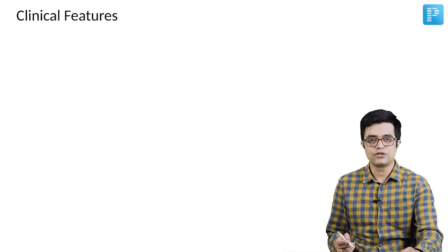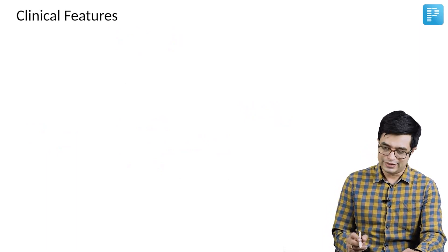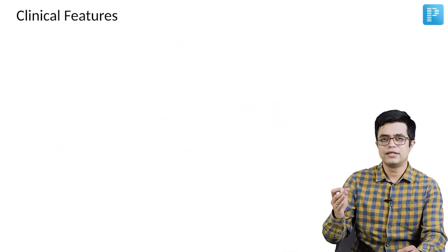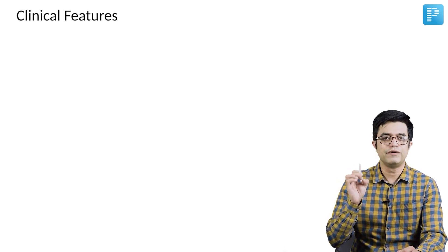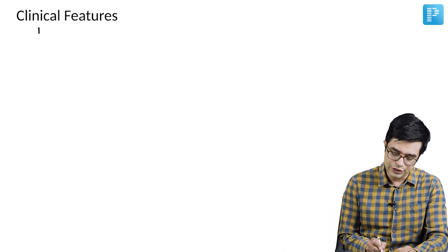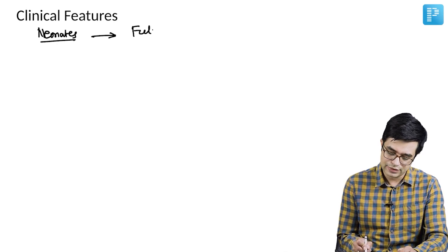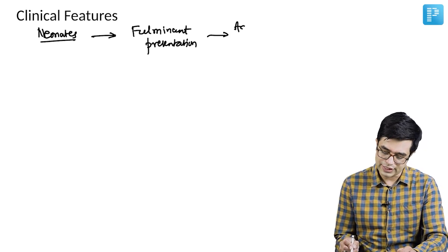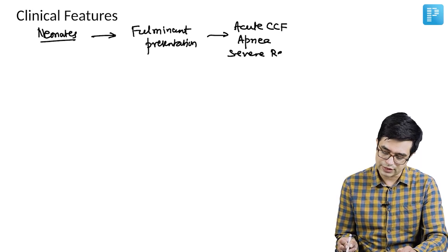Moving over to the clinical features of myocarditis. Remember that as age advances, the degree of severity or the acute presentation tends to fall down. What we find is that neonates usually present with a fulminant presentation in the form of acute onset congestive cardiac failure. They will have episodes of apnea and severe respiratory distress and are found to have very high mortality.